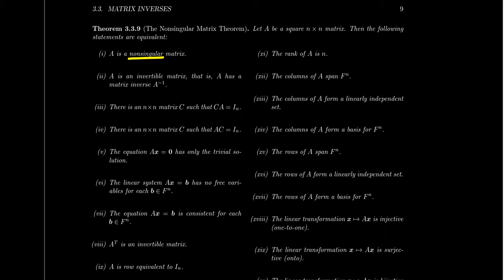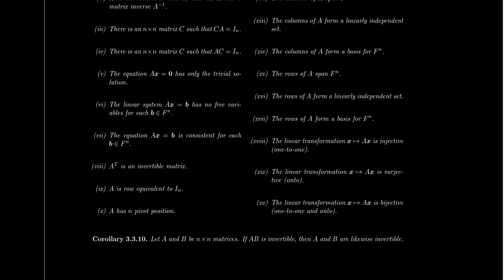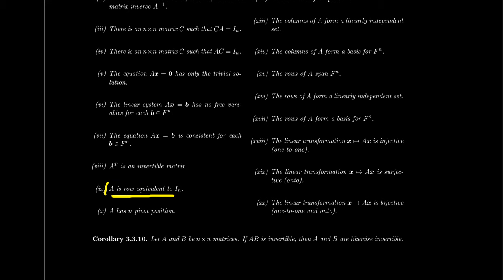Once we connect things together, we get all these other properties. A would have n pivot positions — the same thing as saying the rank is n. Another important one: A is row equivalent to the identity matrix, which is the same as being non-singular, because if you have a pivot in every single column and it's a square matrix, that thing would row reduce to the identity. We can also make a connection to matrix transformations: the linear transformation sending x to Ax would have to be an injective map if A is non-singular — it would have to be onto, one-to-one and onto. If you get one of those conditions, you automatically get both. This is just 20 properties and is not an exhaustive list by any means.